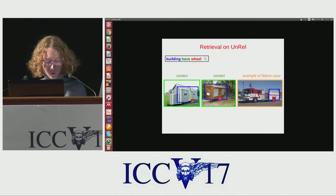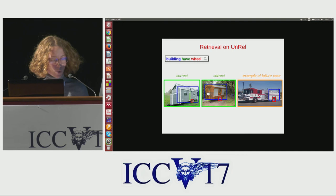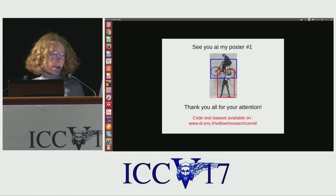Let me show some qualitative results of retrieval for unusual queries. For the query 'building half-wheel,' we show the detected subject in blue and the detected object in red. The two first images are top-scored positives, and the last column shows a top-scored negative — where the common failure mode is wrong object detection. For the query 'dog ride bike,' a failure mode is challenging spatial configuration. The code and datasets are available online.